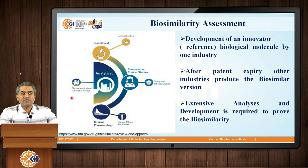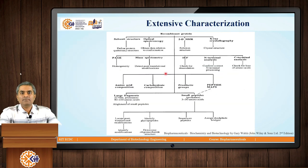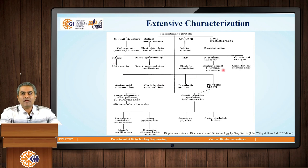In the four quadrants, the first is physicochemical and structural characterization by different analytical methods. This chart indicates the different methods like mass spectrometry, 2D NMR, X-ray crystallography, isoelectric focusing, peptide mapping, polyacrylamide gel electrophoresis, N-terminal sequencing, and C-terminal analysis. All these methods involve extensive characterization of a biosimilar molecule that has to be compared with the innovator molecule.